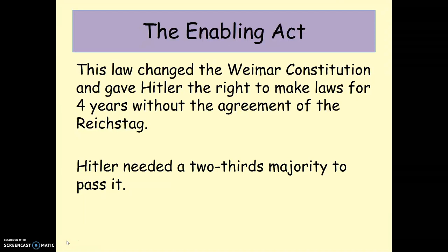Only a few weeks after the elections of March 1933, Hitler managed to pass something called the Enabling Act. Essentially, he excluded the communists from voting on it, and he also managed to persuade some of the other political parties — such as the Nationalists and the Catholic Centre Party — to support it. The Enabling Act gave Hitler the power to be a dictator — the right to make laws without having to seek the approval of the Reichstag. This was an absolutely crucial turning point in enabling him to become a dictator, and he used these extra powers to stamp his authority on Germany.